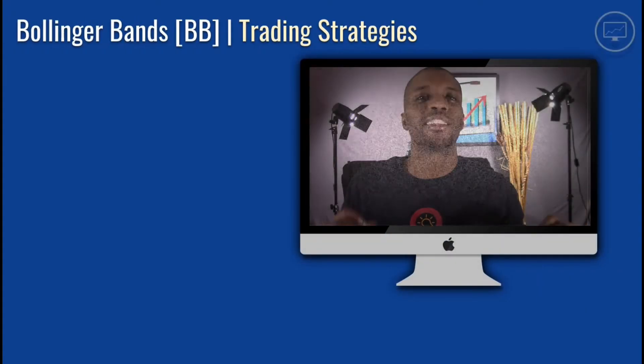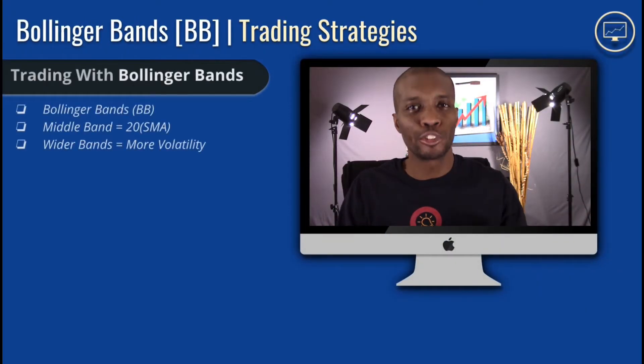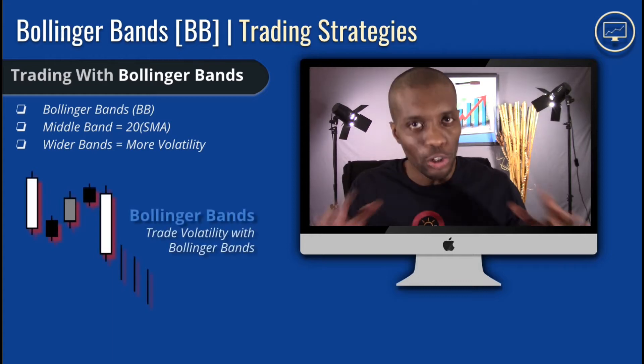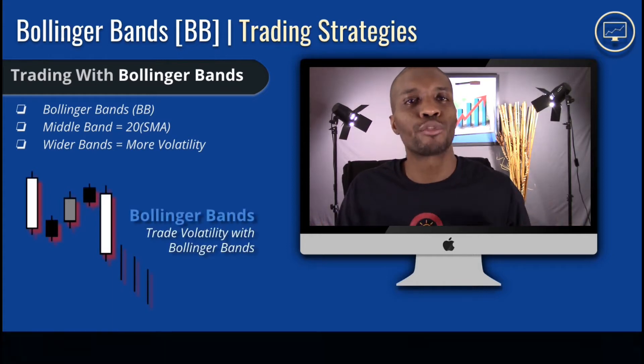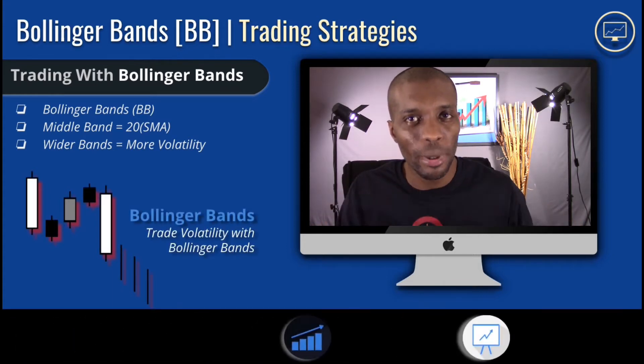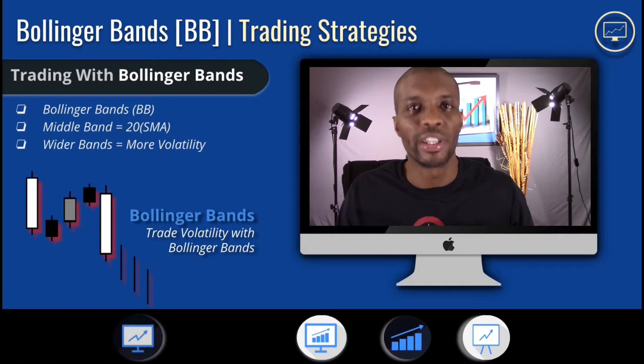So now let's take a look at one of my favorite overlays to use for trading: Bollinger Bands. Bollinger Bands can measure volatility with bands placed both above and below the selected moving average.